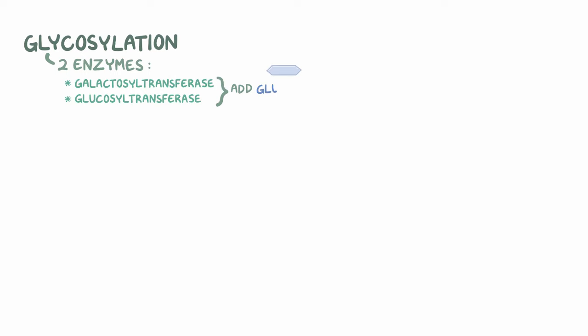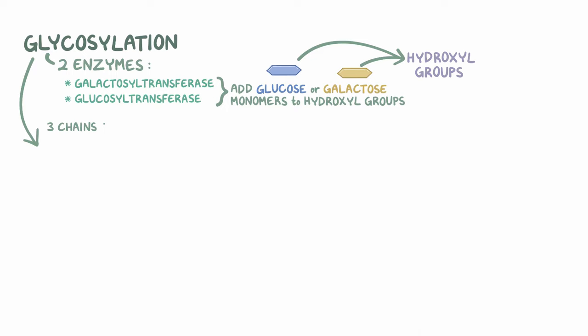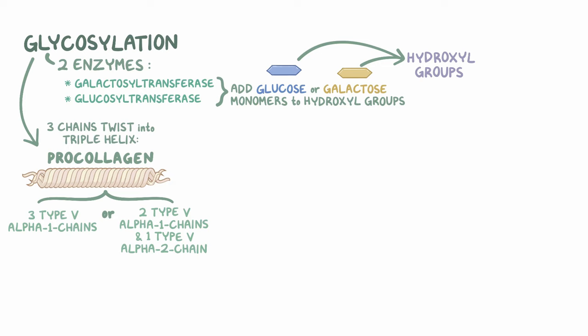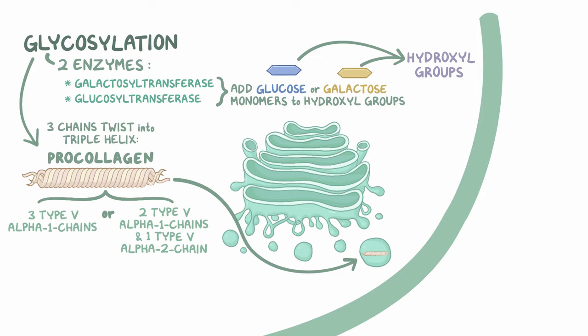Then, there's a process called glycosylation, which is done by two enzymes, galactosyltransferase and glucosyltransferase, which add glucose and galactose monomers onto the hydroxyl groups. After that, three of these chains twist into a triple helix called procollagen. Two combinations can make up the helix or procollagen for type 5 collagen: three type 5 alpha 1 chains, or two type 5 alpha 1 chains and one type 5 alpha 2 chain.